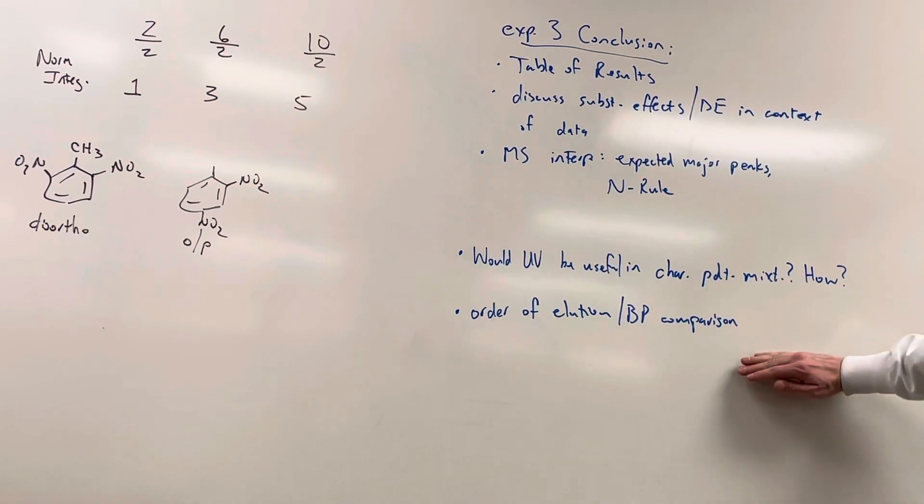And then finally, I'd like for you to address the order of elution relative to the boiling points. Okay. There is, you probably learned this last semester. There is a relationship between the boiling point of a compound and its retention time or elution rate in GC. So you might have to do a little looking, you might have to find the boiling points of your compounds, but do you see that hold up? Do you see that relationship between boiling point and retention time? Does it, is it verified? Okay. Any questions on this?